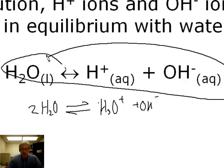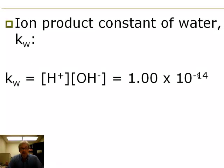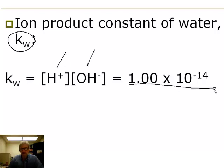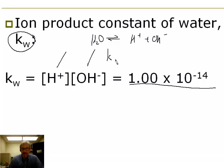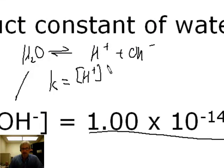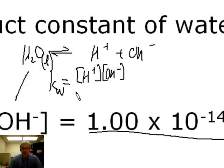This reaches dynamic equilibrium, and like all dynamic equilibria, there is a K value associated with the concentrations of H⁺ and OH⁻. It has a special name — it's called the ion product constant for water, and the symbol is Kw. Kw is the product of the concentration of H⁺ times the concentration of OH⁻. It's really just the Kc for this dissociation. H₂O does not appear in the expression because it's a liquid, whereas H⁺ and OH⁻ are aqueous.